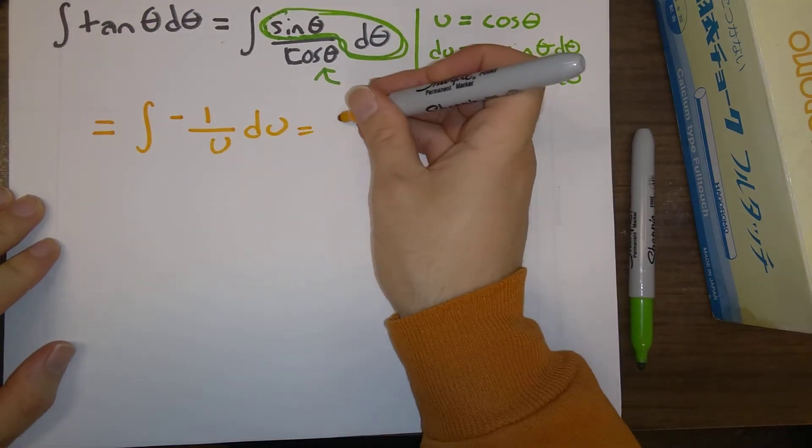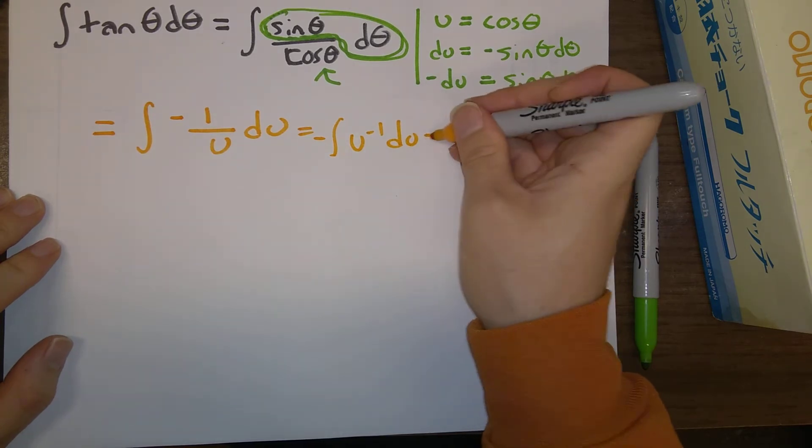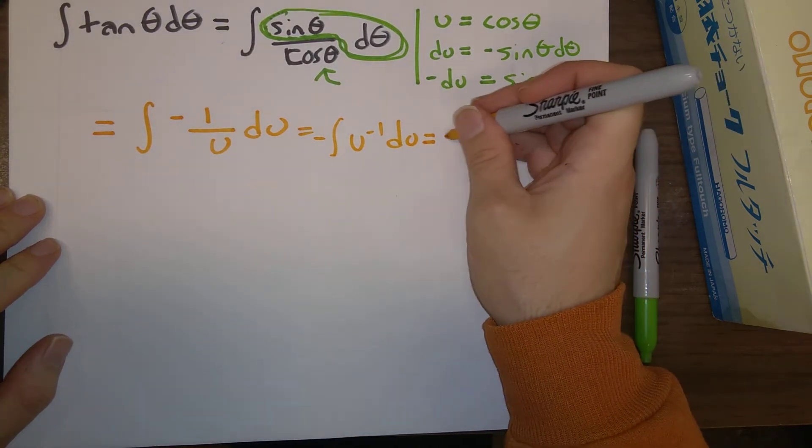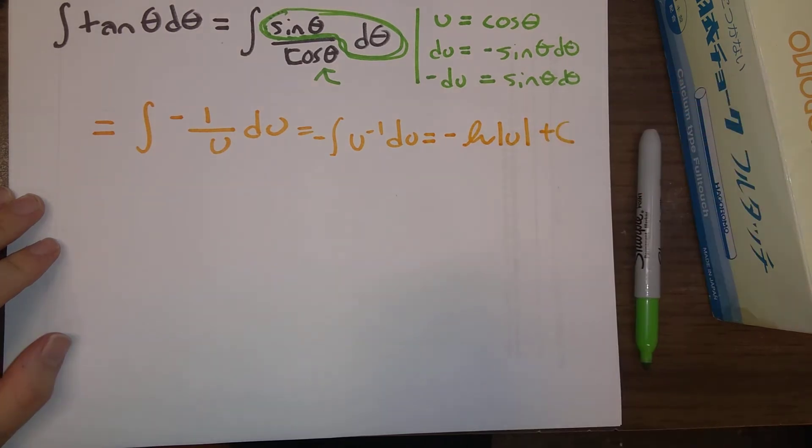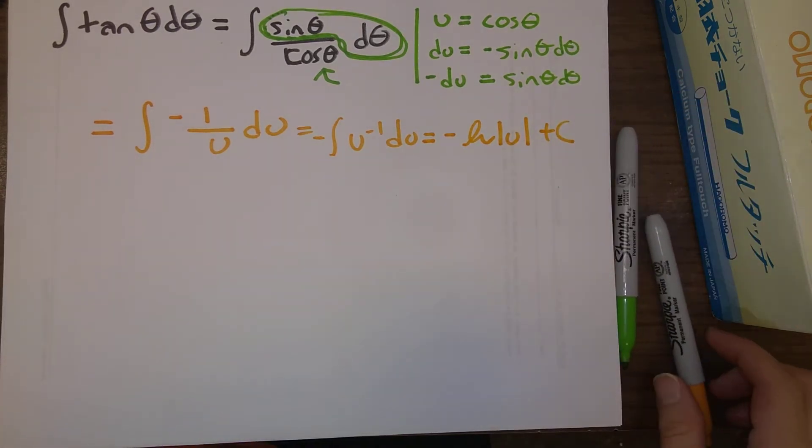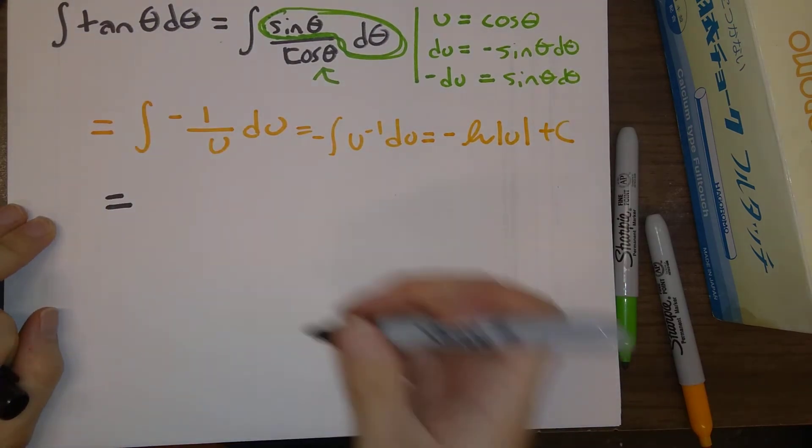And that is, of course, minus u to the minus 1 du. That integral is natural log of the absolute value of u, plus our constant.